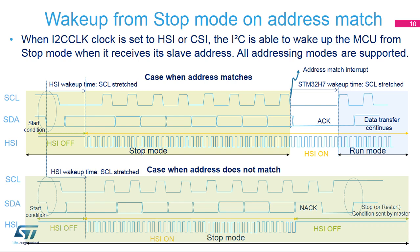If the address does not match, the high-speed internal oscillator is switched off, no interrupt is generated, and the device remains in stop mode. Clock stretching must be enabled because the I2C peripheral stretches the clock line low after the start condition until the high-speed internal oscillator is started. After having received an address that matches the programmed slave address, the I2C peripheral also stretches the clock line low until the STM32H7 device is awakened.